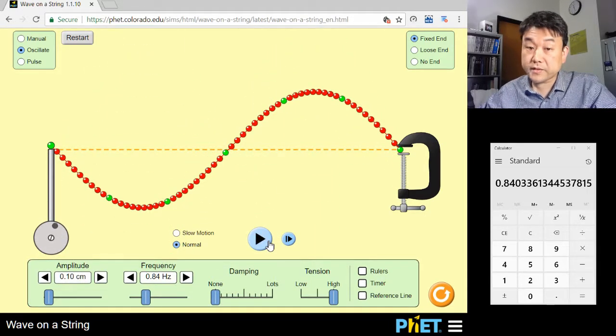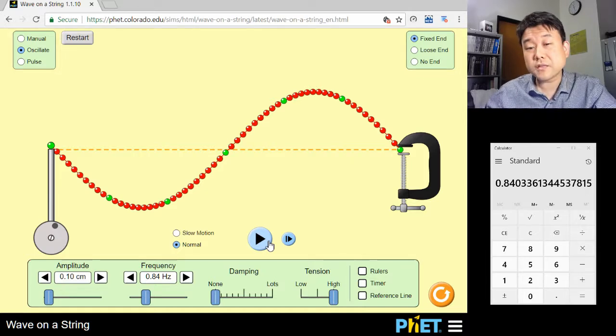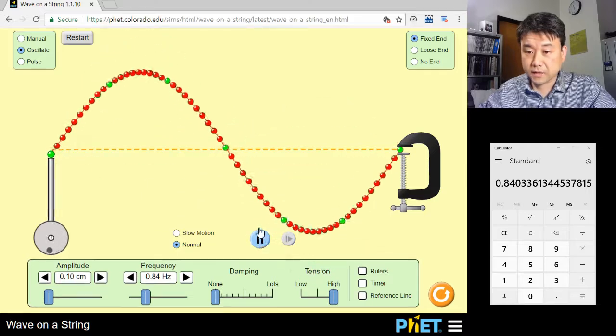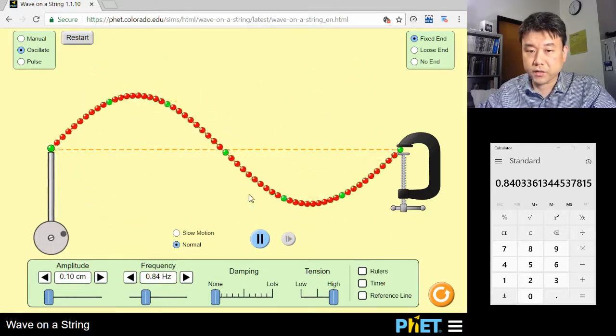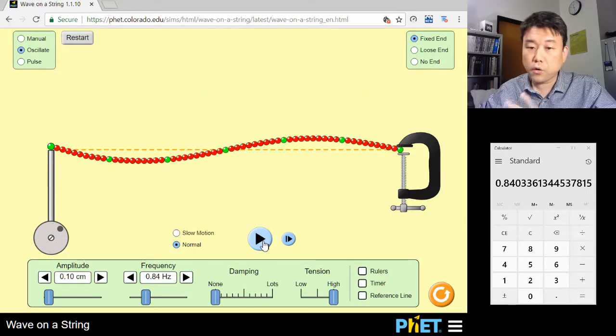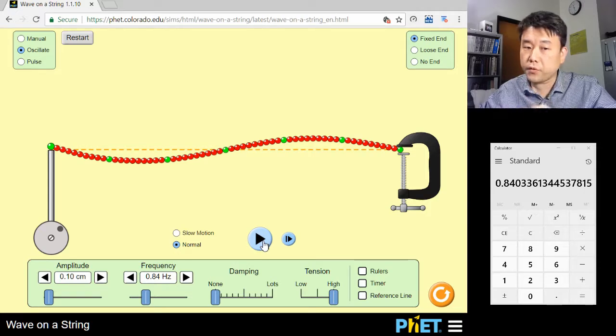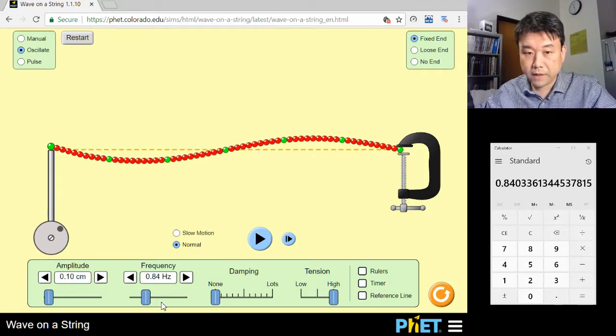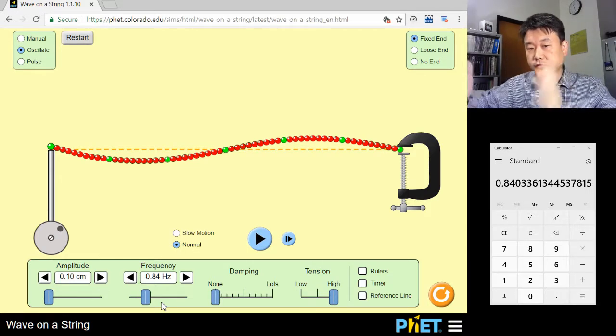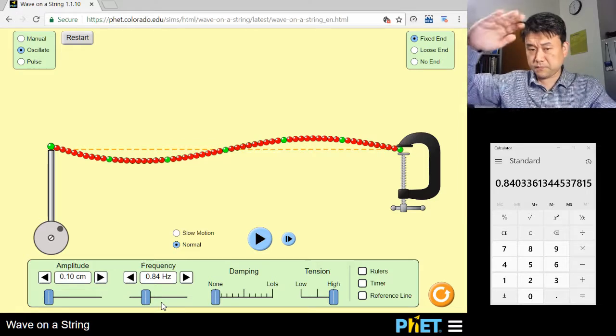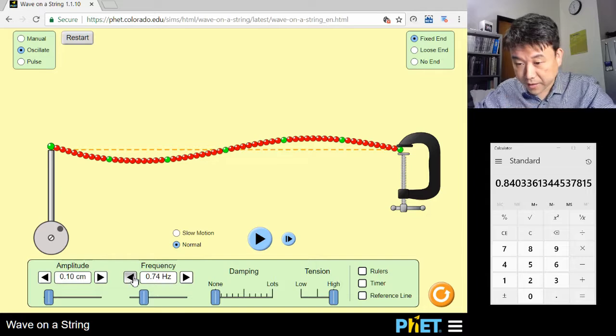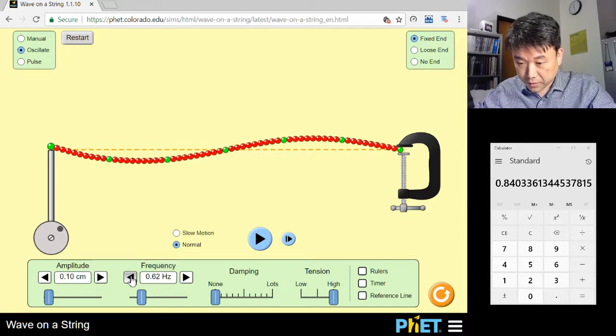Once we figure this out, then you can get other frequencies that will also work. For example, this standing wave has an extra node in the middle. We could get a longer wavelength and have no node in the middle. So remembering that V equals F times lambda. If I have a wavelength longer by a factor of 2, then the frequency is smaller by a factor of 2. So let me try 0.42.